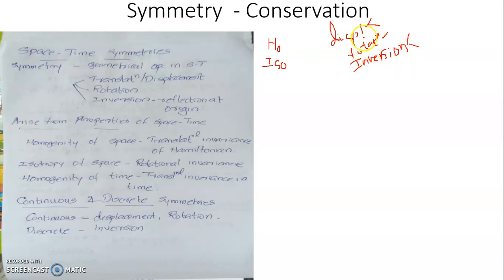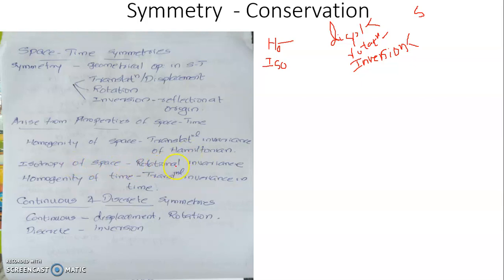So in geometrical symmetries, we will have 2 + 2 + 1 = 5 different symmetry operations and 4 different associated conservation laws, since there is no conservation law associated with inversion in time. The invariance of the system under displacement in space or time is related to the homogeneity of space and time, while the invariance under rotation in space stems from the isotropy of space. Homogeneity of space gives rise to translational invariance of the Hamiltonian; isotropy of space gives rise to rotational invariance; homogeneity of time gives rise to translational invariance of the Hamiltonian in time.